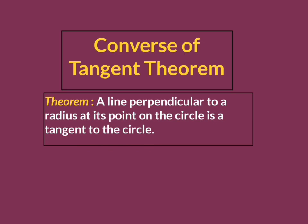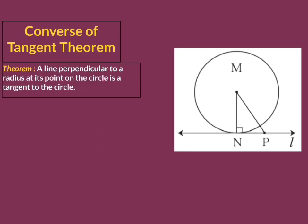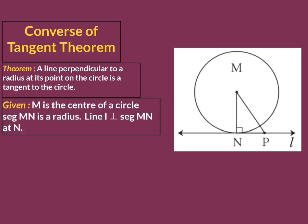Now we have to draw a diagram according to the given information — a circle and a line which is perpendicular to the radius. In this diagram there is a circle with center M, and segment MN is the radius of that circle. Line L is perpendicular to segment MN at point N. So the given information is: M is the center of the circle, segment MN is the radius, and line L is perpendicular to segment MN at N.